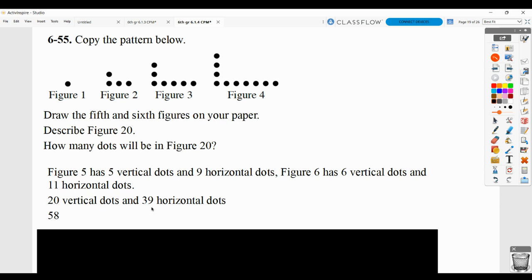And then figure 20, we just talked about here, would have a total of 58 dots. Now, you might say 20 plus 39, that doesn't equal 58. Well, remember, if you look at the pattern the way we're describing it here, this dot is getting counted twice. It's getting counted in the vertical and in the horizontal. So, in terms of how many dots we have, we'd have 20 plus 38 because we don't want to count that dot twice. That's how they got the 58.